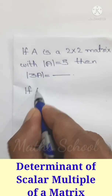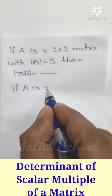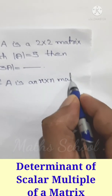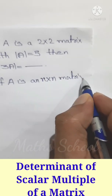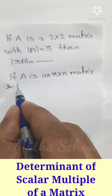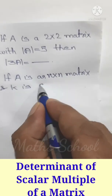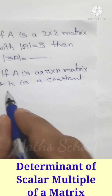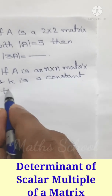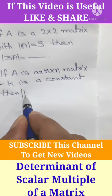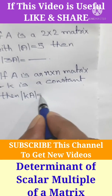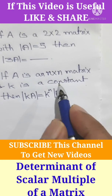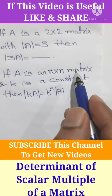If A is an n by n matrix and K is a constant, then determinant of KA equals K raised to n into determinant of A, where n is the order of the matrix A.